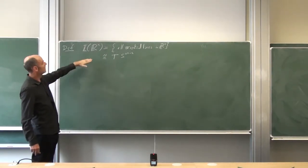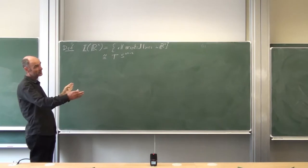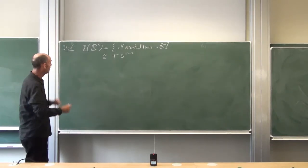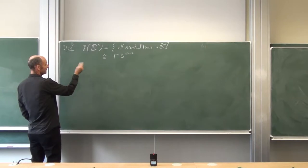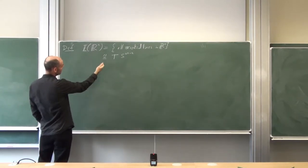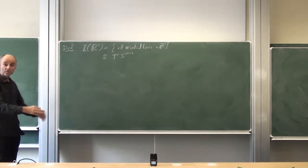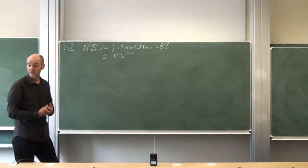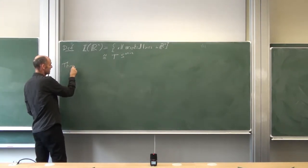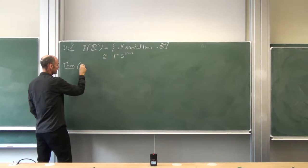Now we can ask: what happens to the Euclidean group acting on this space? The Euclidean group takes points to points, but it also takes straight lines to straight lines. So we can ask: is there any invariant structure on the space of all oriented lines which is preserved by the Euclidean group? That's the Euclidean symmetry theorem.